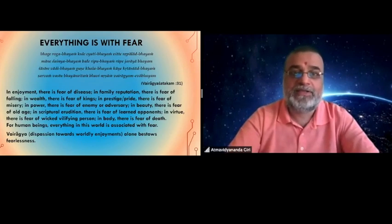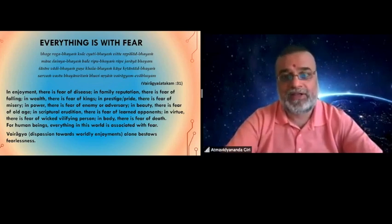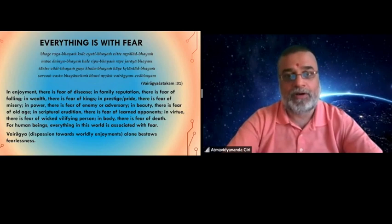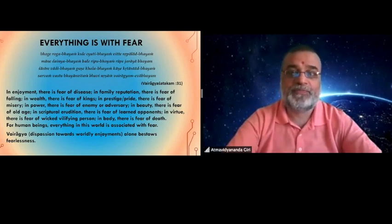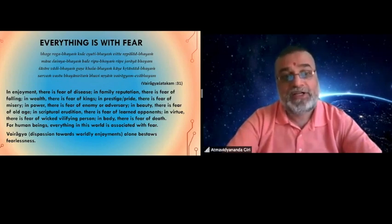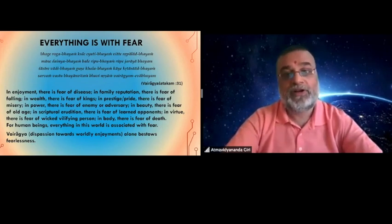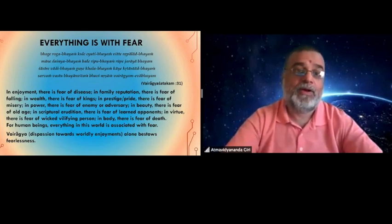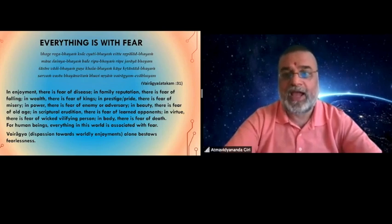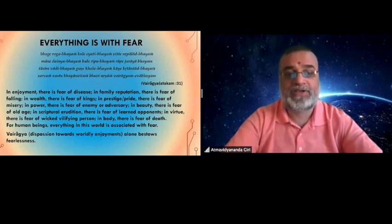Now, further, if you want to analyze, I want to share with you Sage Bhartrahari, long back in India, who was a king, then he became a monk. He wrote 100 verses on vairagya or dispassion. So, in one of the verse 31, he wrote that everything in this world is associated with fear, whether it is family reputation or it is wealth or it is prestige, beauty, power or even knowledge. So, anything we have, it is always associated with fear, but when we have detachment, we are having dispassion, then we can become completely free from fear.